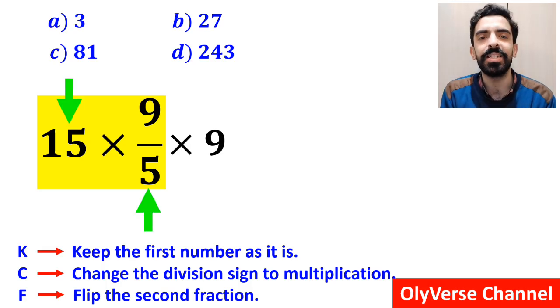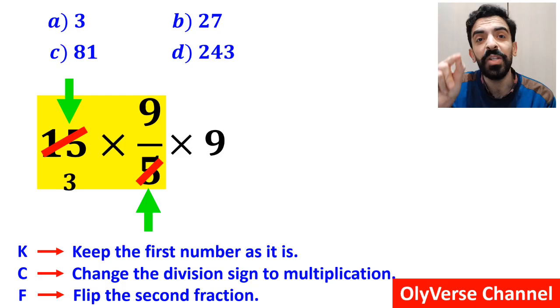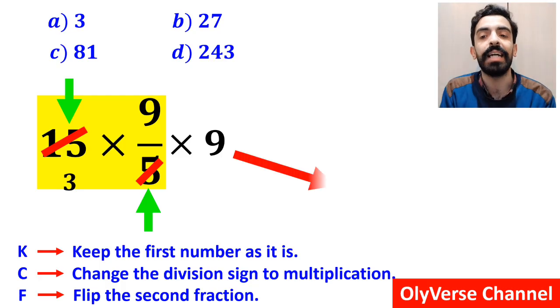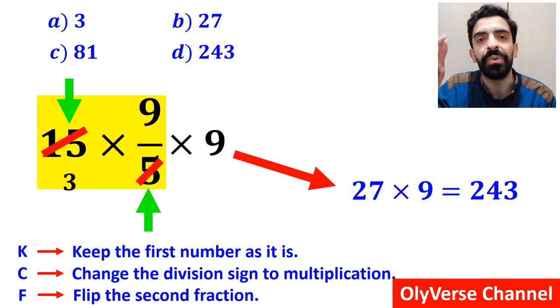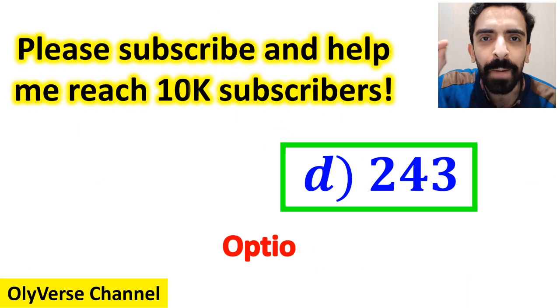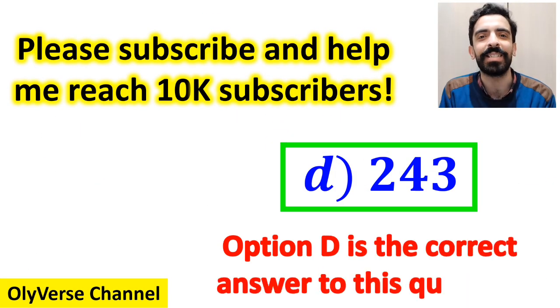As you can see on the screen, the number 15 simplifies with the 5 in the denominator, and instead of this expression, we can write 27 multiplied by 9, which finally gives us the answer 243. That's great. Option D is the correct answer to this question.